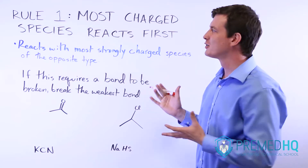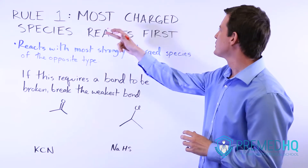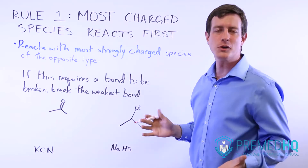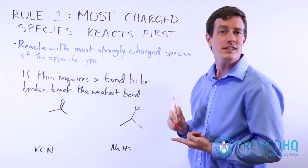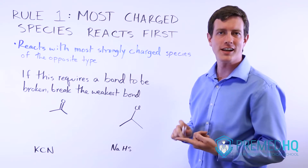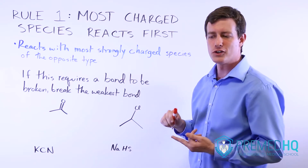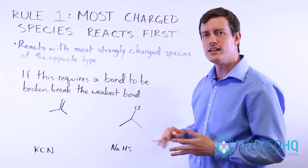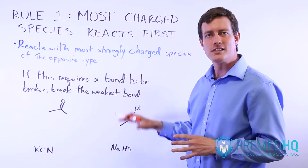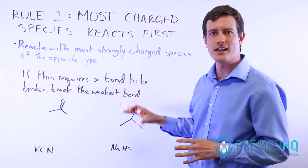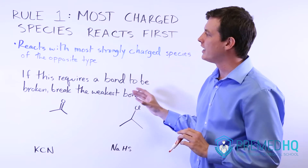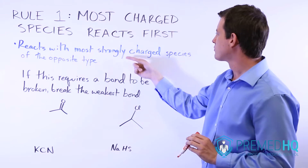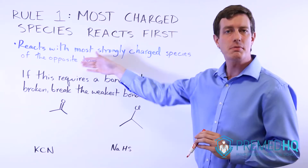Having discussed our golden rule — that the most charged species will almost always react first — and having gone through the exceptions with the spectator ions, the conjugate acid of strong bases, the conjugate bases of strong acids, and the diprotic amino acids as our three exceptions, we can now go into the next part: the most charged species will react first, and it will do so with the most strongly charged species of the opposite type.